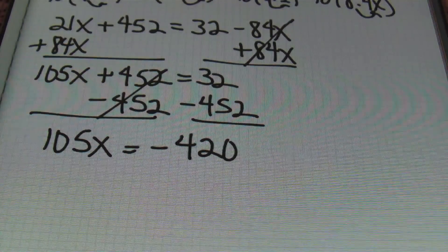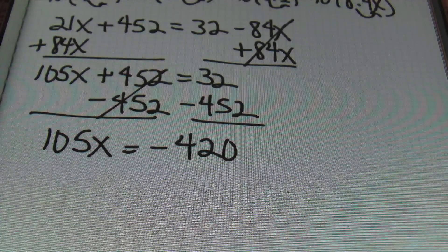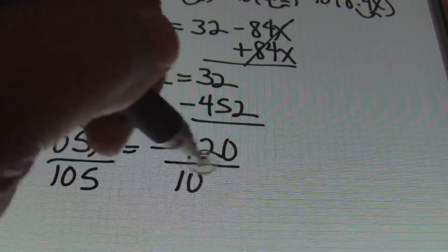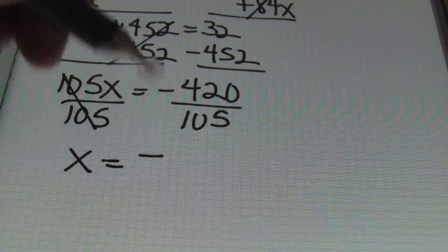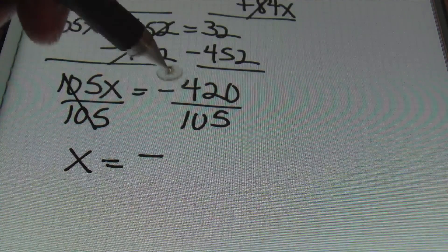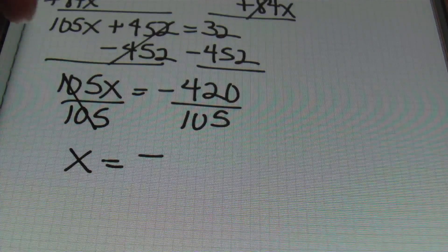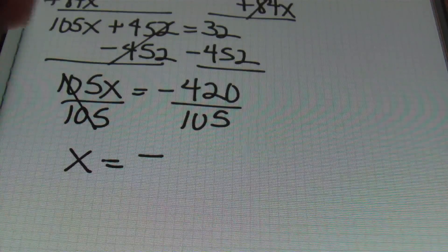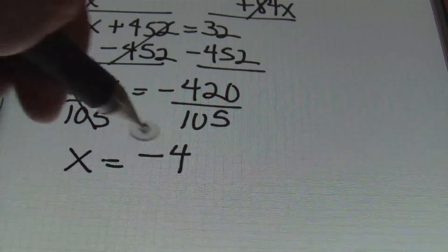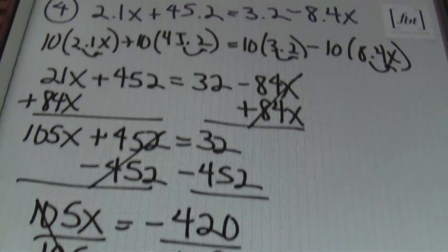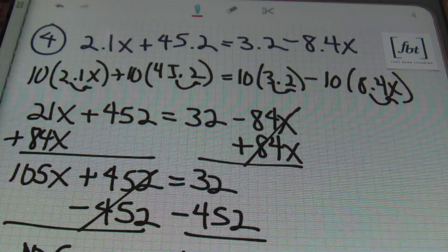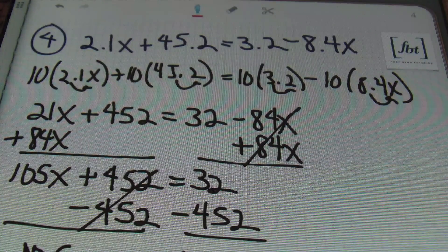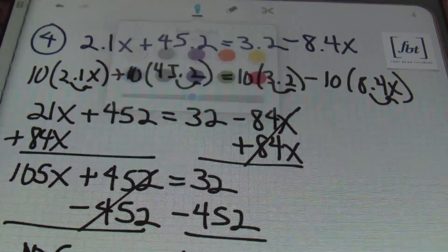Dividing both sides by the coefficient 105, the 105s simplify and I have 1x. A negative divided by a positive is always negative. 105 goes into 420 four times, so my result is negative 4. So remember, we started out with decimals in all those terms and got rid of them all by multiplying by the smallest place value — the tenths place — so we multiplied both sides by 10. That was problem number 4.